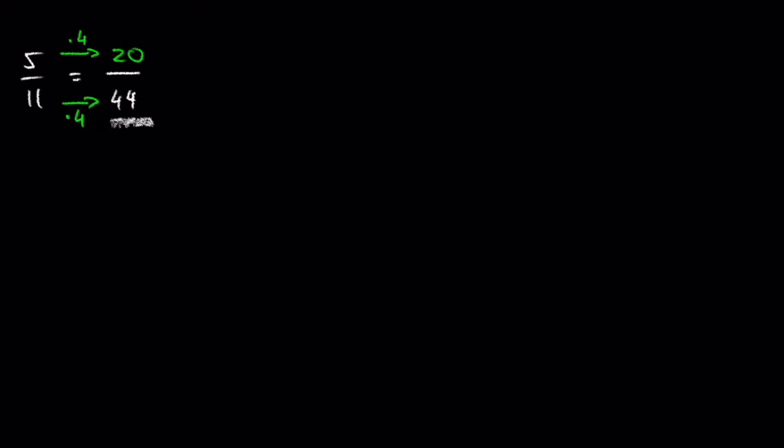Let's look at the next example. Change 3 over 7 into an equivalent fraction with the denominator 35. 35 divided by 7 is 5, so 7 times 5 is 35. To get an equivalent fraction we have to multiply the numerator as well by 5, so 3 times 5 is 15.